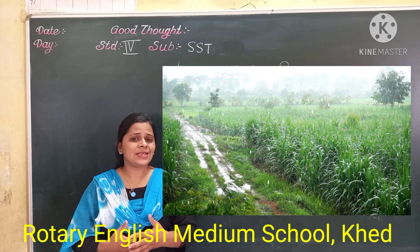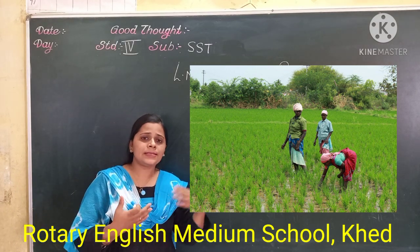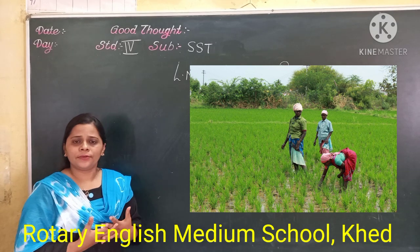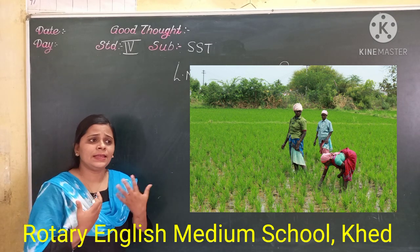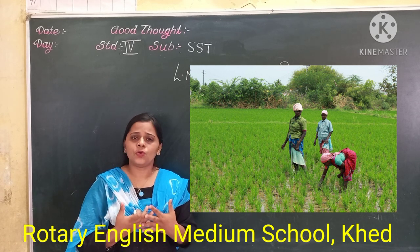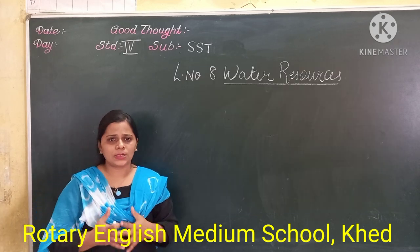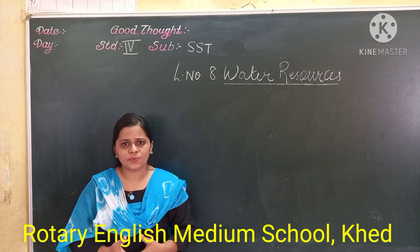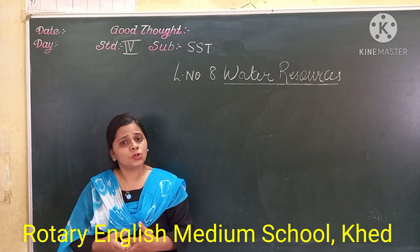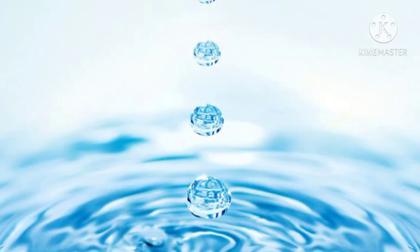But students, in some places even in the rainy season there is no rain. So what do you think they will do to grow crops? As you know, in India the rainy season is for 4 months. But what about the remaining 8 months? When will you get water? So these waters have to be stored somewhere for the purpose of growing crops and other uses.